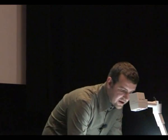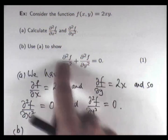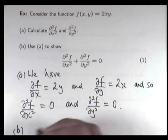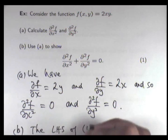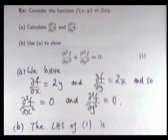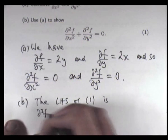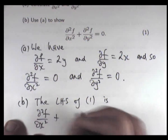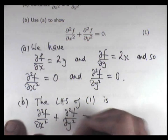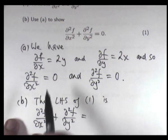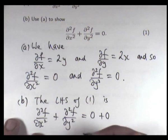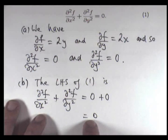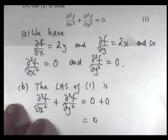All right. So let's show that this equation holds. So the left-hand side of (1), it's ∂²f/∂x² plus ∂²f/∂y². And then from a, we know that this is 0 and this is 0. And so we get 0, which of course is the right-hand side of (1).